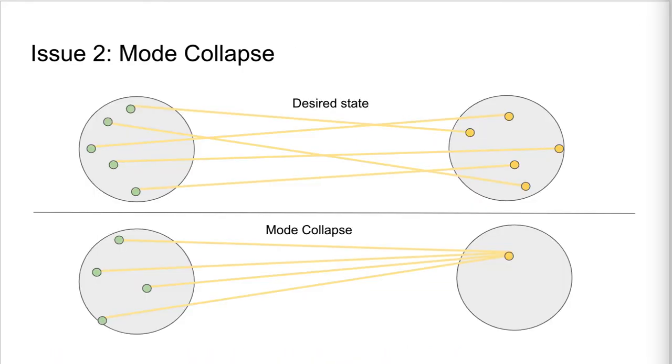Another issue that can arise is mode collapse. This occurs when the generator stumbles upon an output that completely fools the discriminator, and the generator starts to output this only specific image, regardless of the input noise.